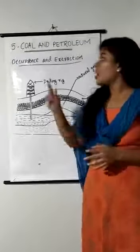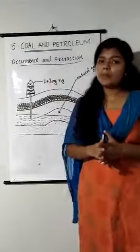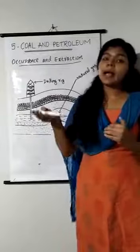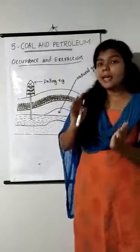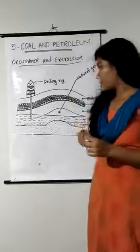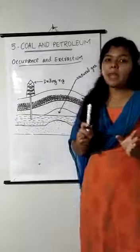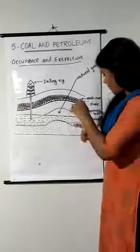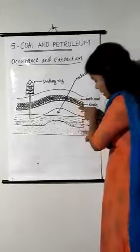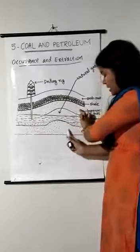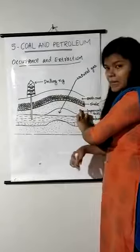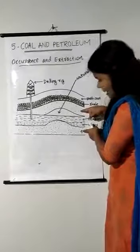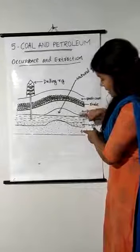The next topic is the occurrence and extraction of petroleum. Petroleum lies deep under the earth's surface between two layers of impervious rocks — as shown in the textbook figure on page 84. The petroleum is trapped between two impervious rock layers.